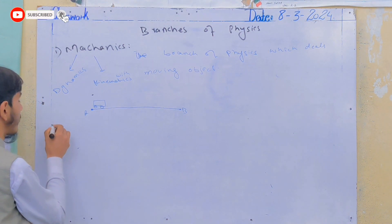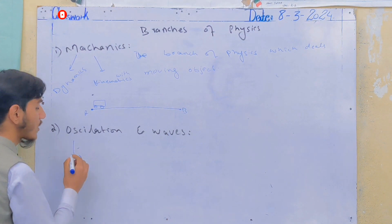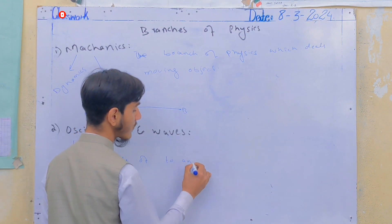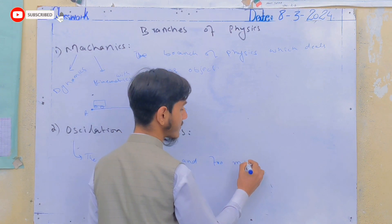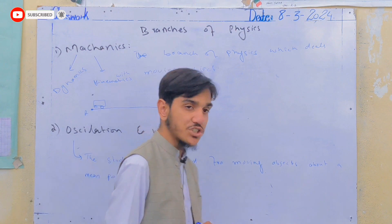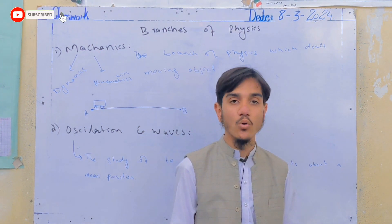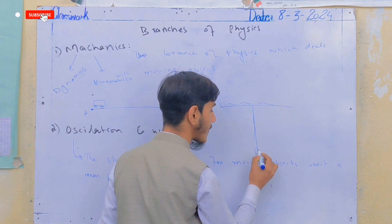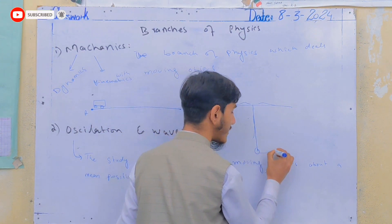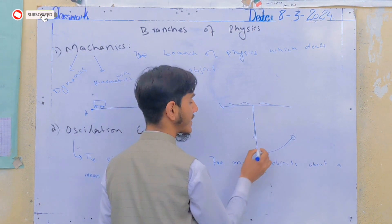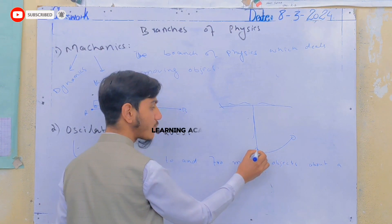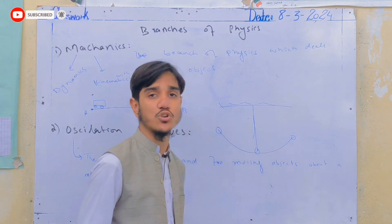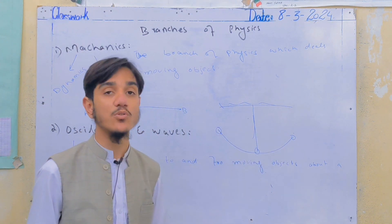The second branch is oscillation and waves. Oscillation involves vibratory motion — that is, the study of to-and-fro moving objects about a mean position. For example, if you have a string with a bob and you pull it back and release it, it continues back-and-forth motion. That is oscillation.